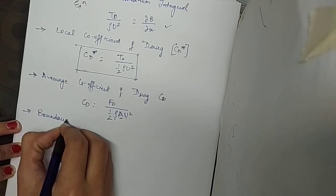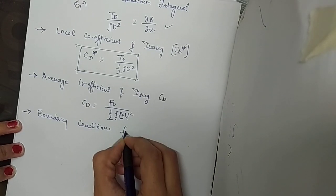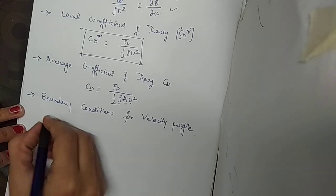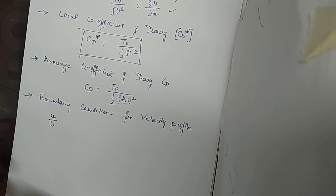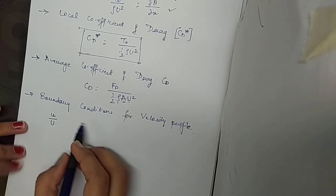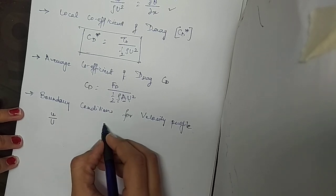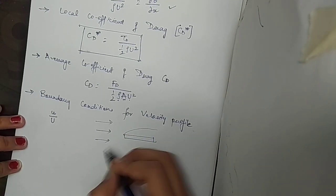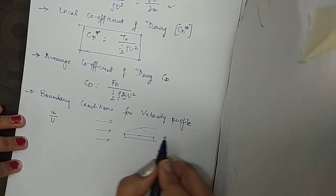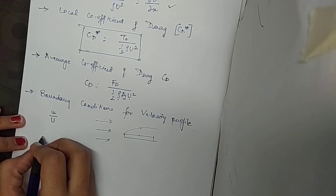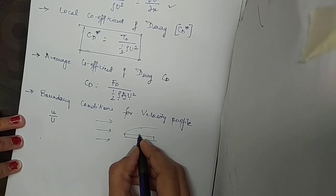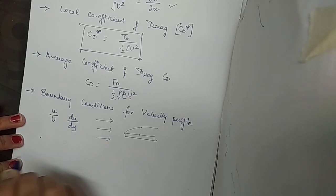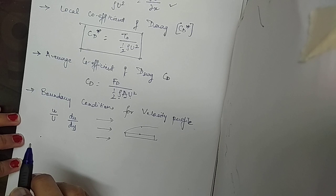Next let us see some boundary conditions for the velocity profile. Velocity profile means we are taking the ratio of small u to capital U. Whenever we are considering one plate, the boundary layer is being generated. The velocity is ranging from the plate surface to the top limit, and it is always mandatory to know what the velocity will be at each point. The velocity is continuously varying, and because of this the velocity gradient is developing.